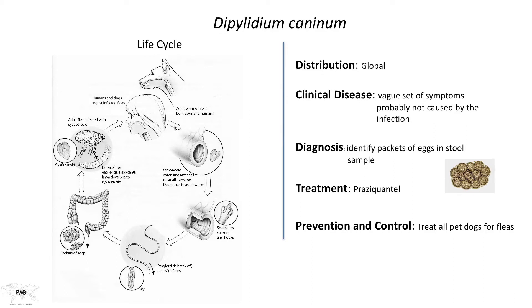The larva of the parasite is in the muscle tissue of the flea and is released by the act of digestion in the small intestine. The scolex evaginates out of the flea tissue, is stimulated to attach to the small intestinal wall, and three months later gravid proglottids are being shed into the environment — in this case shed as clusters of eggs.